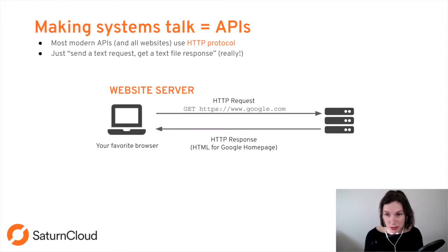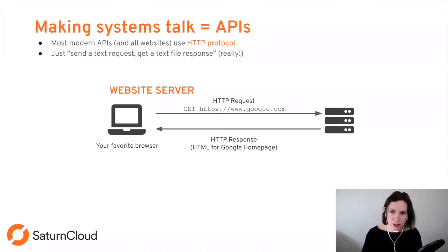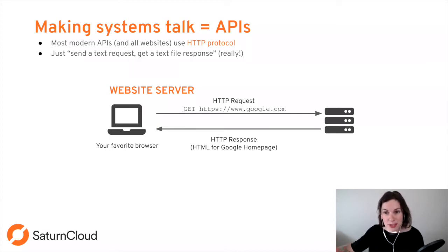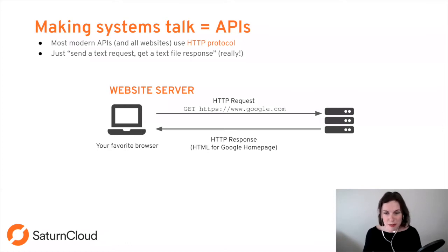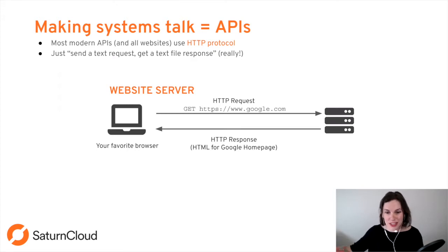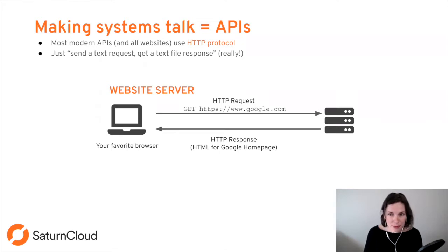Basically, all the HTTP protocol is, is sending a text message somewhere and getting a text response back. If you go to www.google.com in a browser, you're sending text and Google is sending text back. That's all that's happening between APIs or websites — computers sending texts back and forth to each other. When you view a website, your computer does a GET request to a server, and that server sends back an HTML text file, which turns into the webpage you see.